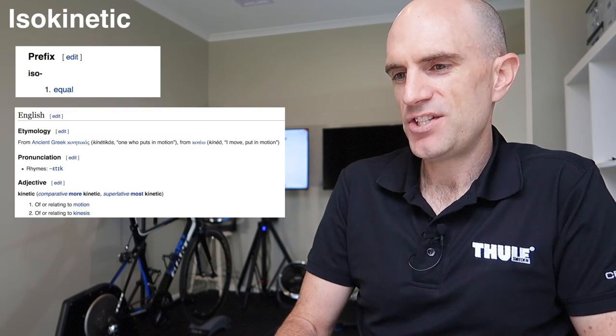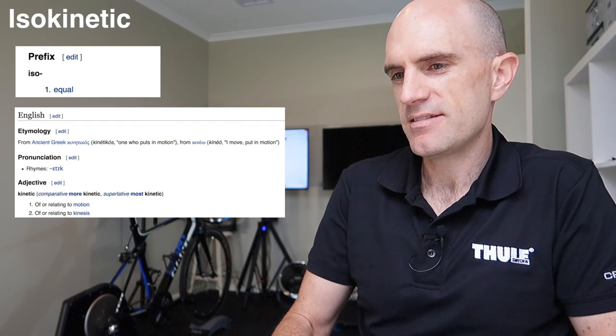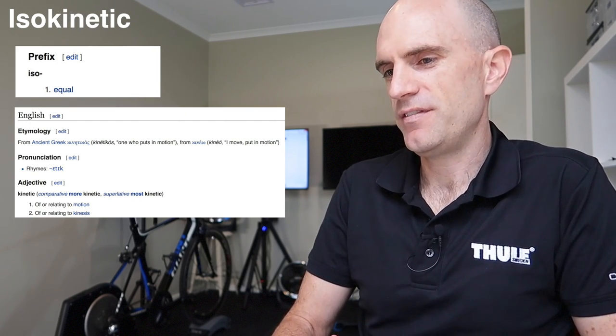First up, let's look at isokinetic mode. The word ISO means equal and kinetic means motion or movement. So equal movement. According to this definition, isokinetic exercise is an exercise that provides variable resistance to constant limb movement. One example of isokinetic exercise is a stationary bike that responds to a constant leg movement by the user.